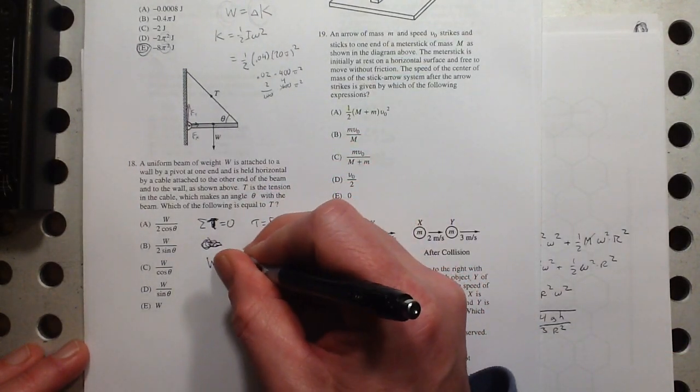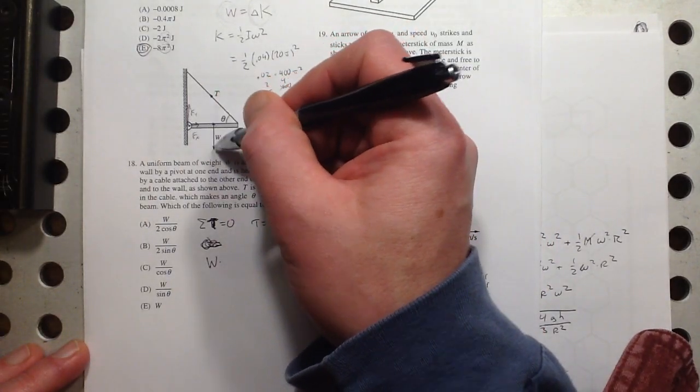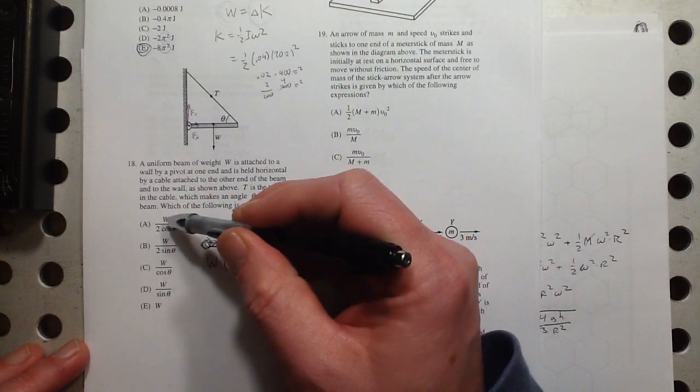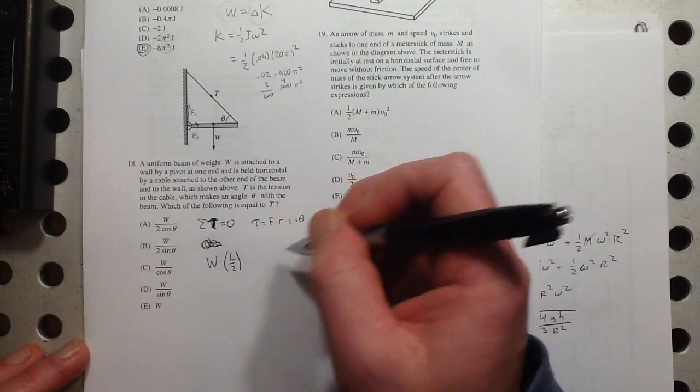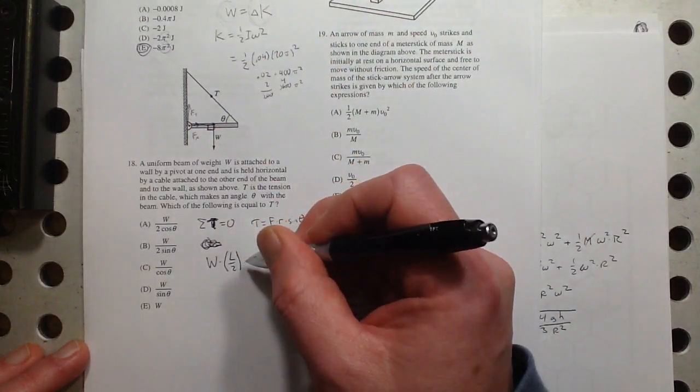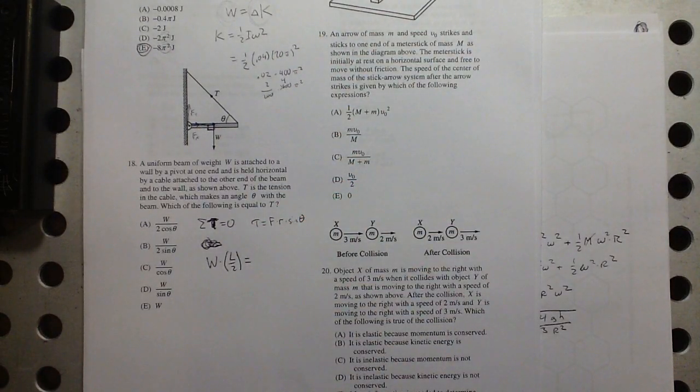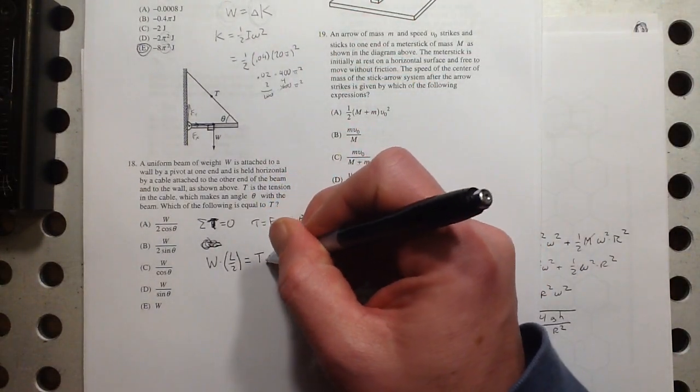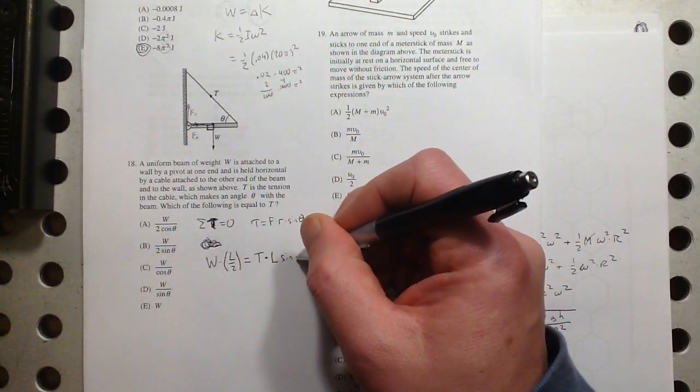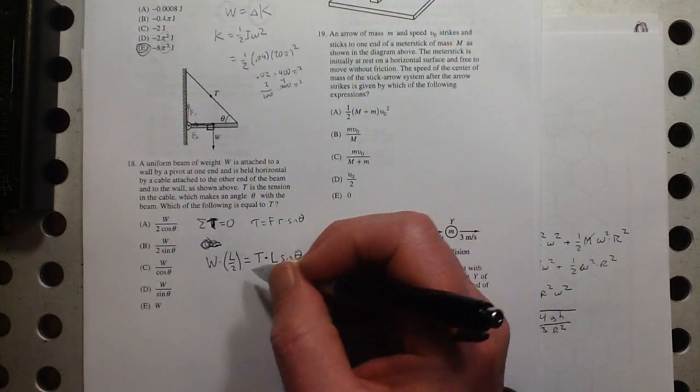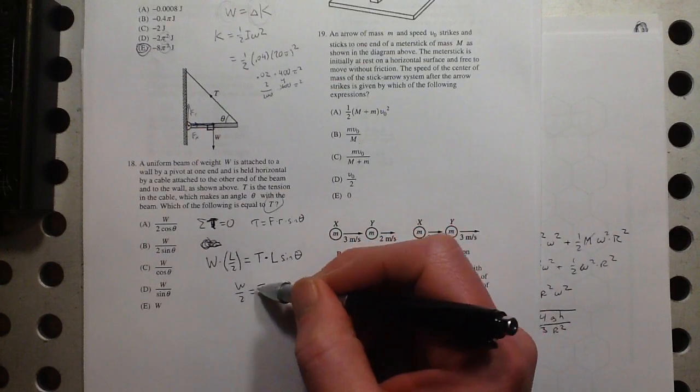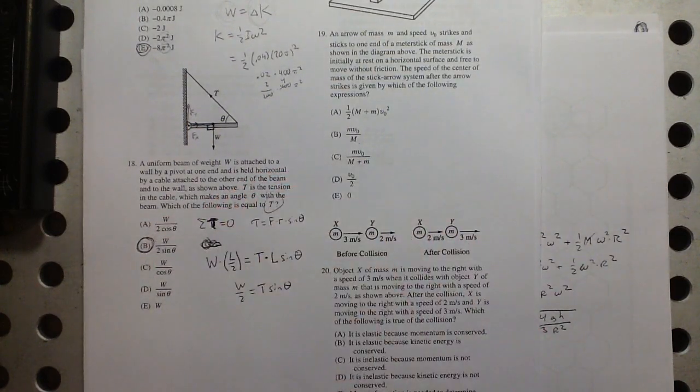So torque is equal to force times radius times that angle, the sine of the angle rather. So let's see, for this one, that's W times the radius where that's acting. It's acting at half the length of the thing. So that would be L over 2. And if you're nervous that there's no L's in any of these, well, hopefully that'll cancel out. Times the sine of theta. But here, the angle that this torque is acting at is 90 degrees. So sine of 90 would be just equal to 1. And then that's got to be equal to this torque, which is the tension force. And that's acting at the full length times the sine of that angle theta. So the L's cancel out. I get W over 2 is equal to T sine theta. We're trying to solve for T. So that's going to be W over 2 sine theta. Our answer choice is B.